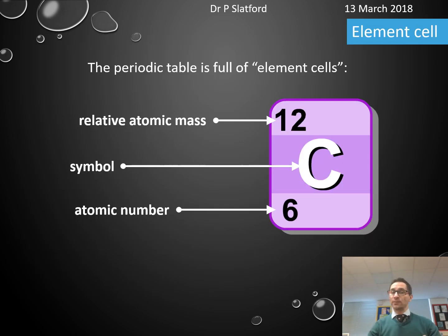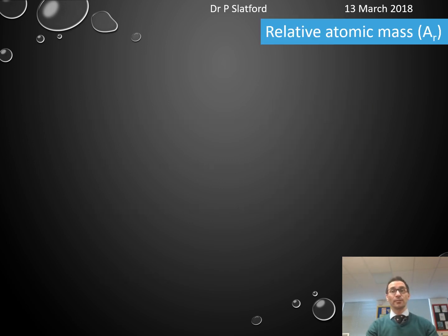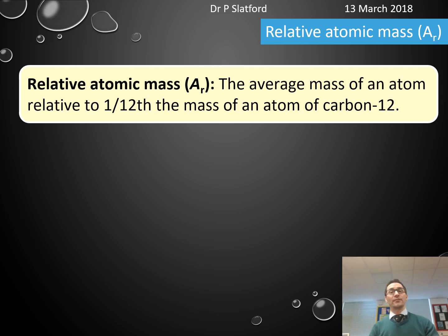So we have our relative atomic mass, we have our symbol, we have the atomic number. Now this presentation is about relative formula mass, but what is relative atomic mass? Well, relative atomic mass is the average mass of an atom relative to 1/12th the mass of an atom of carbon-12. What does that mean?